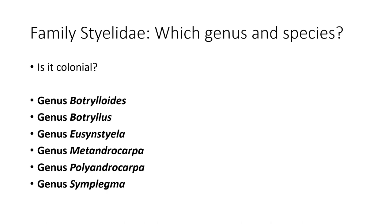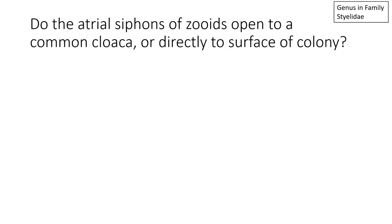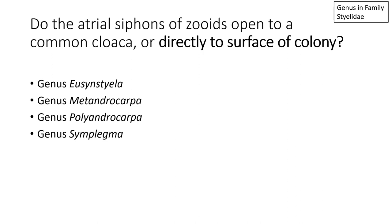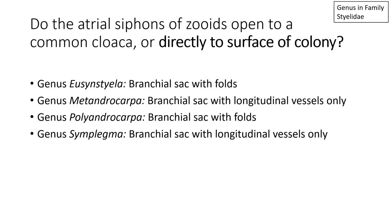In Family Styelidae, there are many more colonial genera than solitary genera. There are six common colonial genera: Botryllus, Botrylloides, Ecteinascidia, Metandrocarpa, Polyandrocarpa, and Symplegma. The key question when trying to get to genus in colonial Styelidae is: do the atrial siphons of the zooids open to a common cloaca, or directly to the surface of the colony? If the atrial siphon opens directly to the surface of the colony, the genera are Ecteinascidia, Metandrocarpa, Polyandrocarpa, and Symplegma.